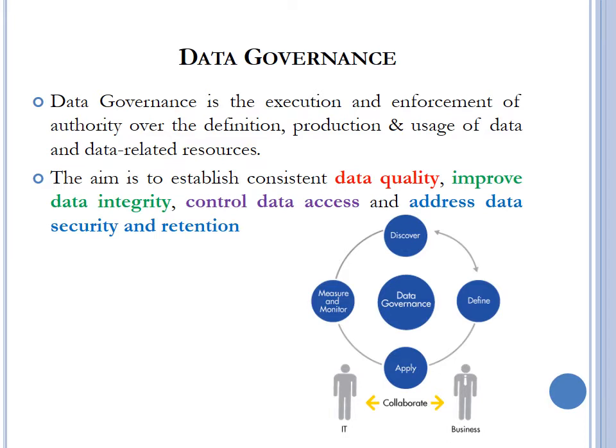Once an organization is serious about capitalizing on data as an asset, it is absolutely crucial that data governance becomes a key cornerstone of its strategy. Data governance is the execution and enforcement of authority over the definition, production, and usage of data and data-related resources. The aim is to establish consistent data quality, improve data integrity, control data access, and address data security and retention. For data governance to be a success, it has to be a collaboration between IT and the business, working hand in hand in defining policies around data management, handling, and processing.